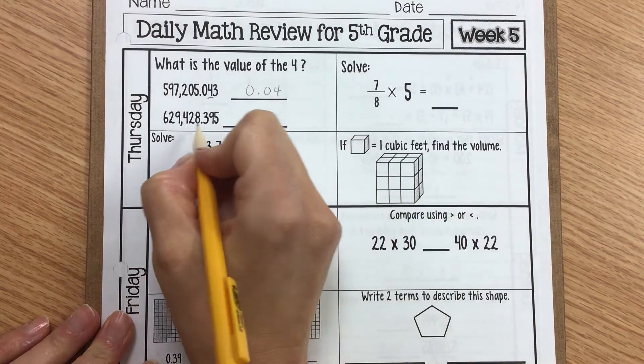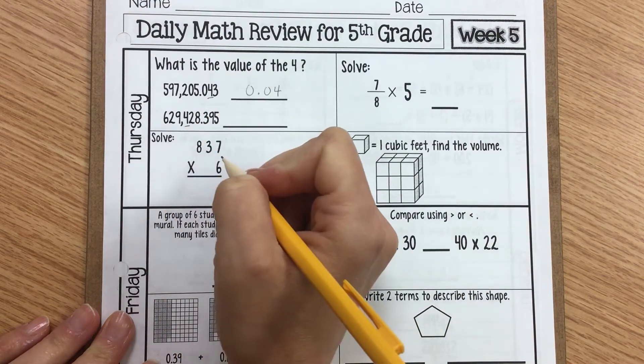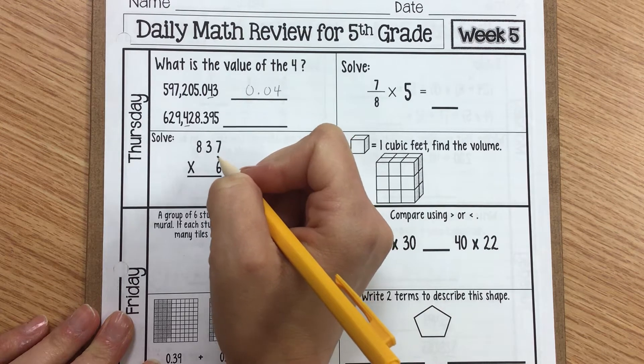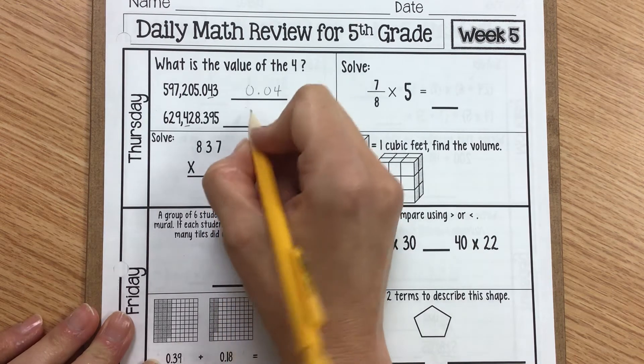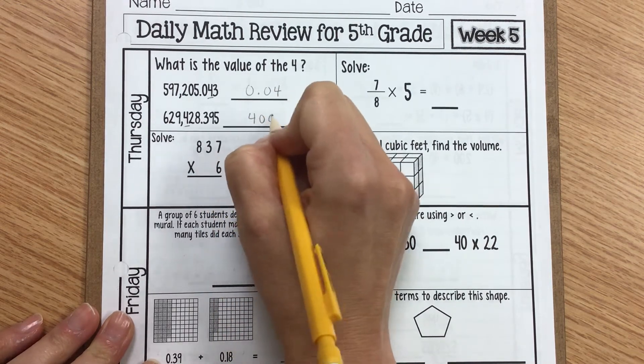The next one, the location of 4 is right here in our hundredths place value. So the value of that 4 would be worth 400.